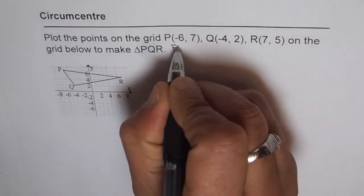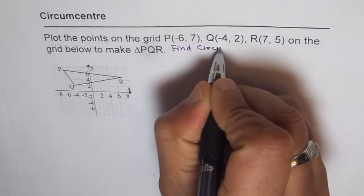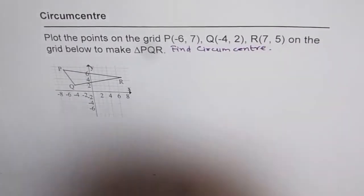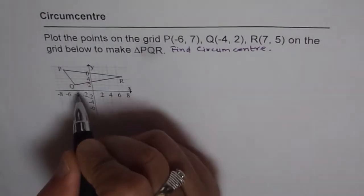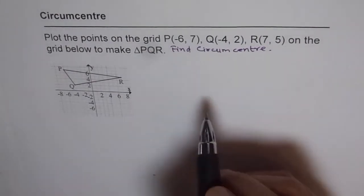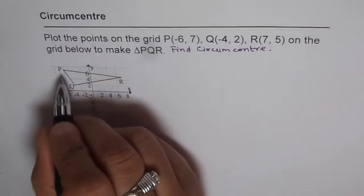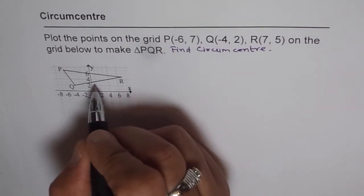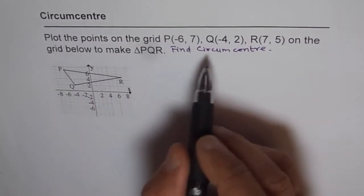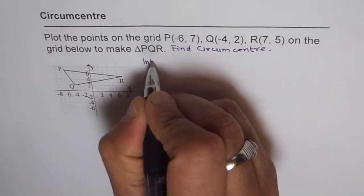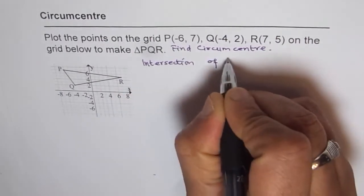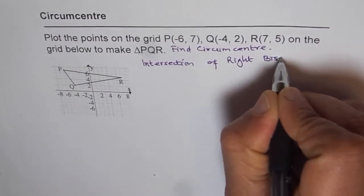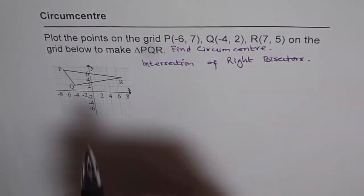To find the circumcenter, you need to find the perpendicular bisectors of each side. They will intersect at a point, and that point is called the circumcenter. We need to find the perpendicular bisector of at least two sides. The circumcenter is the point of intersection of the perpendicular bisectors.